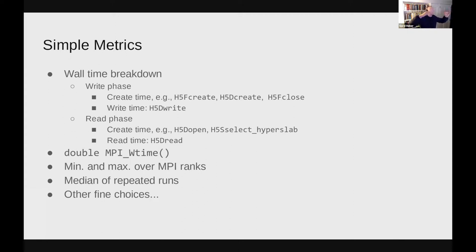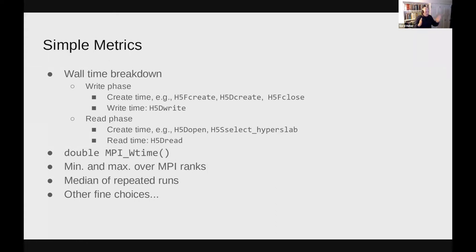In terms of what we measure: first, we measure wall time. As we first write all these arrays and then read them back, we can break down that wall time. In the write phase and read phase, we can measure how much time is spent creating objects, creating the file, creating the datasets, closing the file, and then the actual H5D write or H5D read. We use a simple MPI_Wtime, record the mins and maxes across MPI ranks, and when doing repeated runs we take the median.